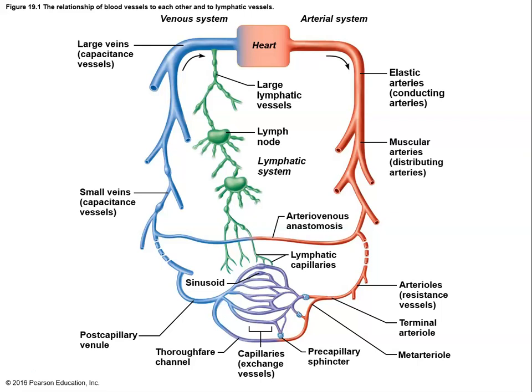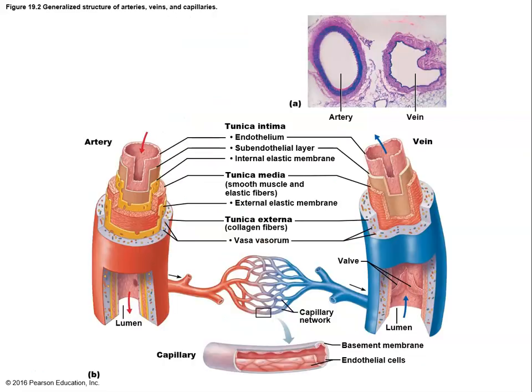Looking at the two main vessels, arteries and veins: the key functional difference is that arteries always carry blood away from the heart, and veins always carry blood back towards the heart. A common statement says arteries always have high-oxygen blood and veins have low-oxygen blood, but exceptions exist — pulmonary arteries have low oxygen and pulmonary veins have high oxygen. What always holds true is the direction of blood flow.